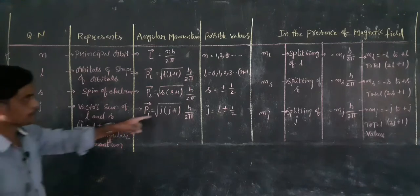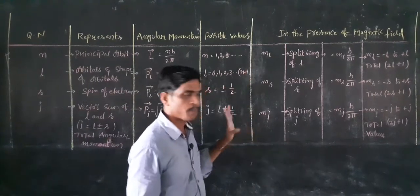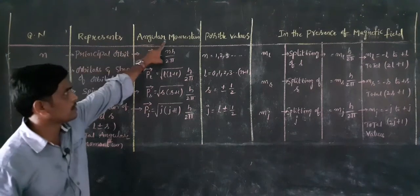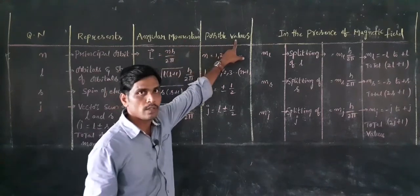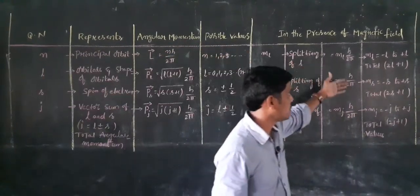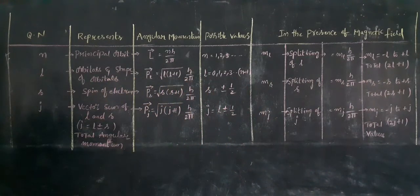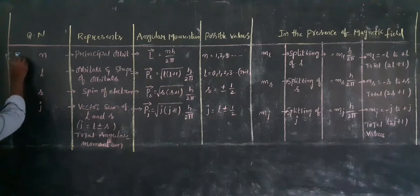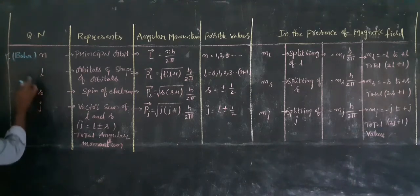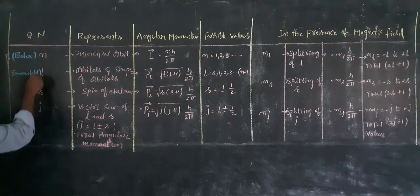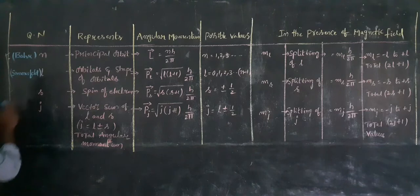There are 4 quantum numbers on one side and 3 quantum numbers here, and 4 quantum numbers on this side. The 1st column is quantum numbers, and the 2nd column is angular momentum and possible values. The 1st quantum number is introduced by Bohr, and the 2nd quantum number by Sommerfeld. And the 3rd quantum number is also introduced.